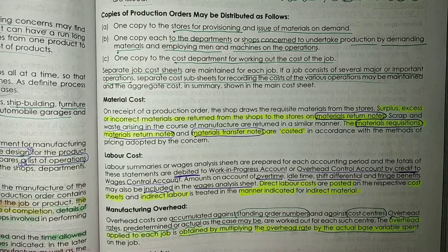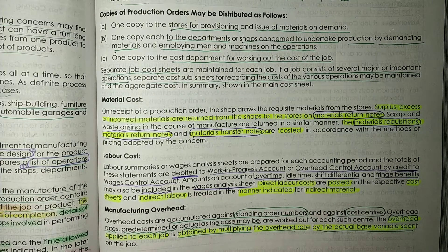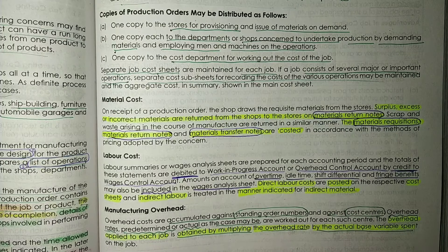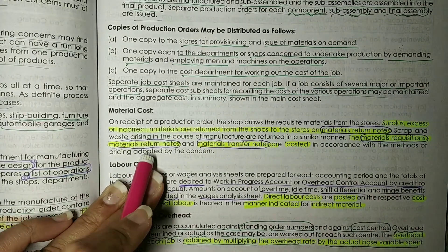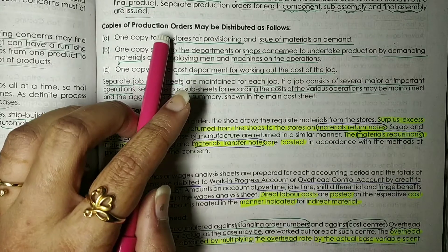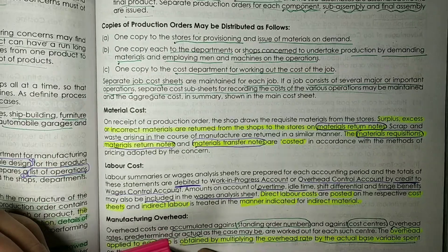Hi guys, thank you so much for watching my channel, The Twisted Olive. We continue doing methods of costing, which is job costing. We saw in the last class what is the procedure, and in the fourth point there is a production order issue. The next topic is how the production order is made and how many copies we have to submit.